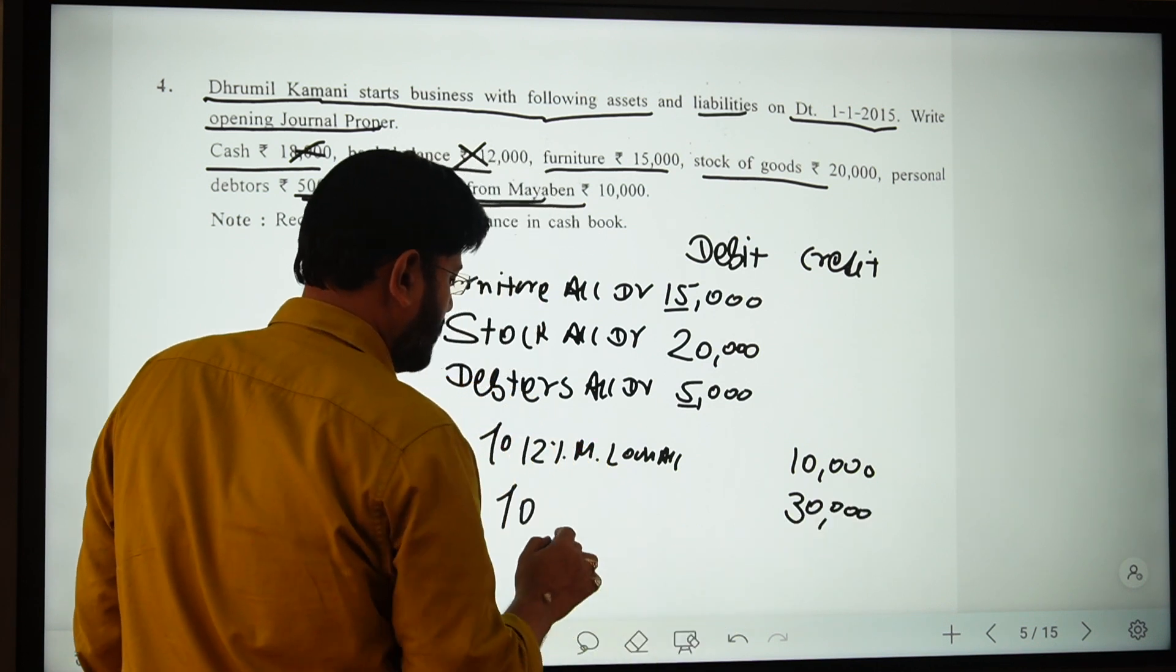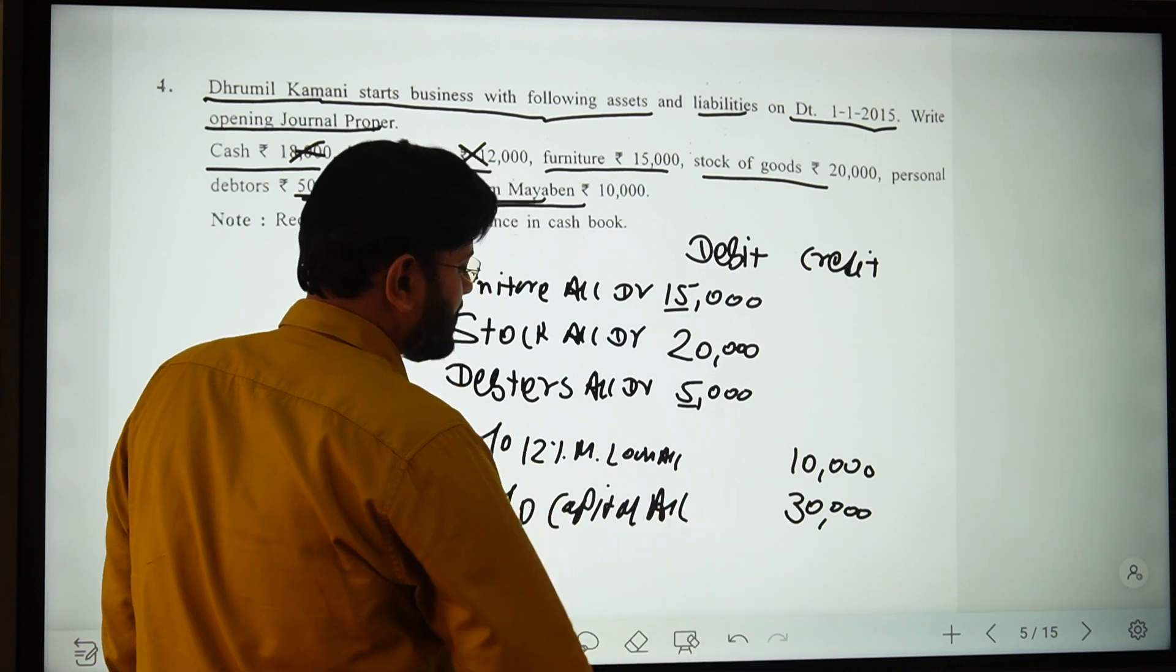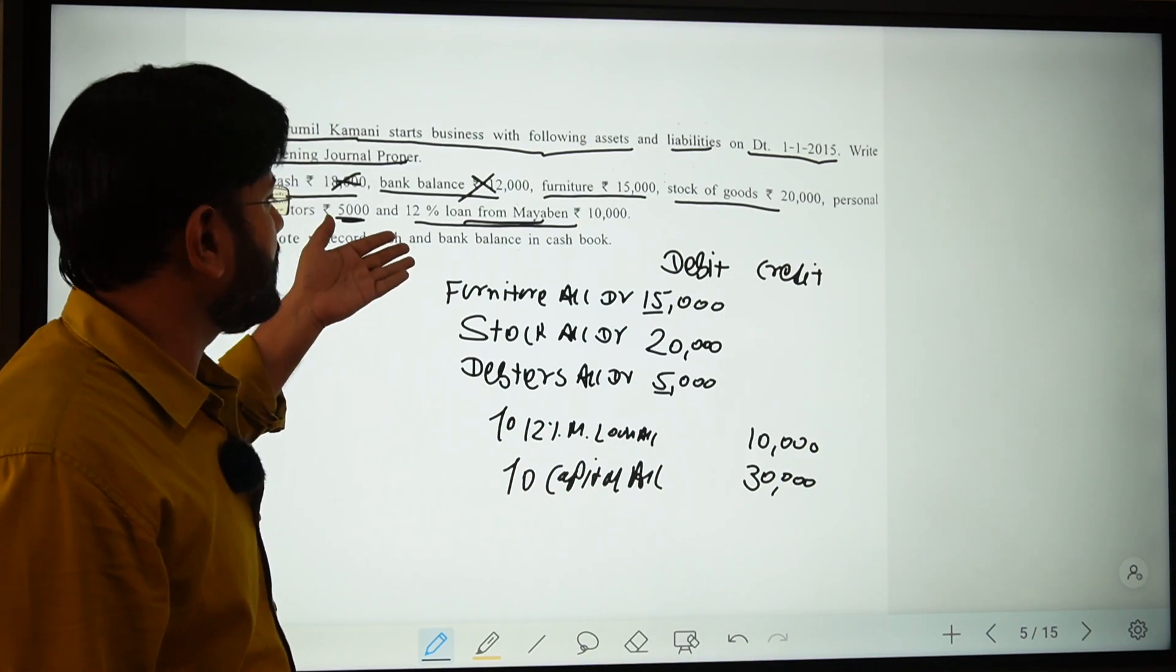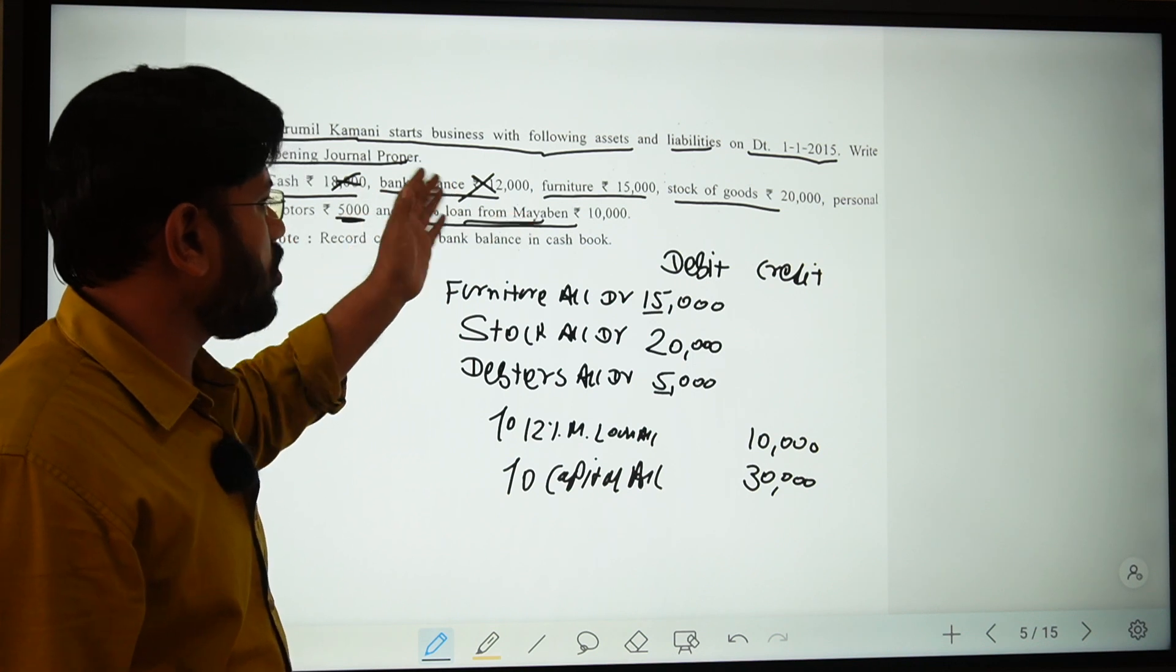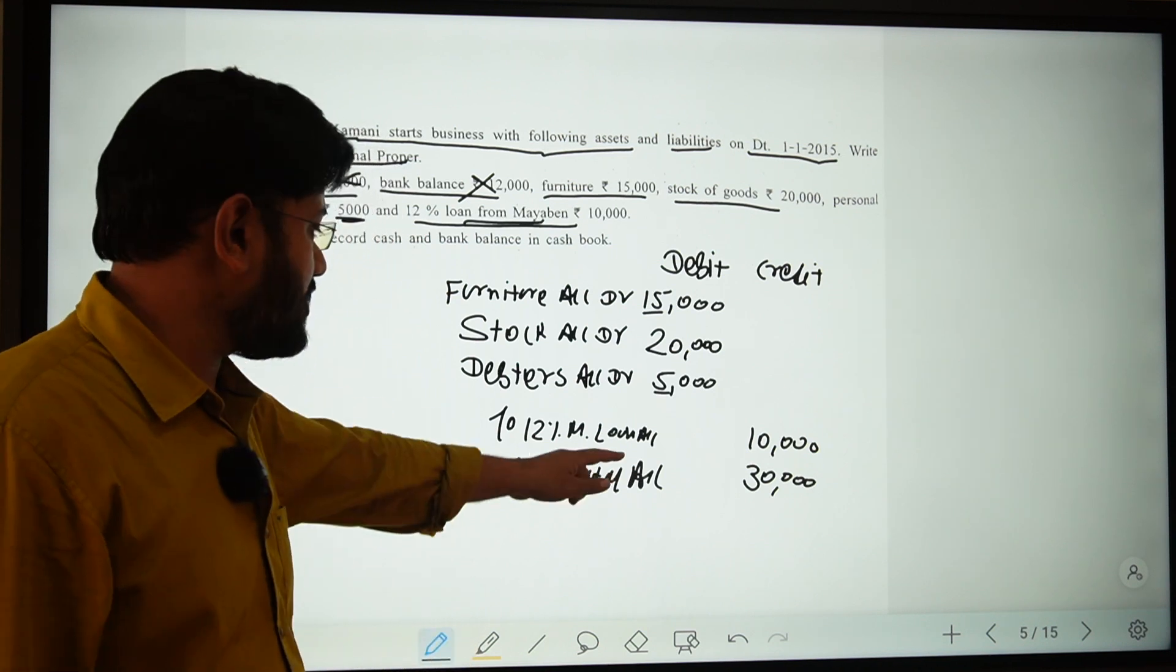Capital account will be credited with this, and this is the end of this entry. In the narration, you can write 'Being business started with furniture, stock, personal debtors, and loan of 10,000.' This is the general entry in the journal proper.